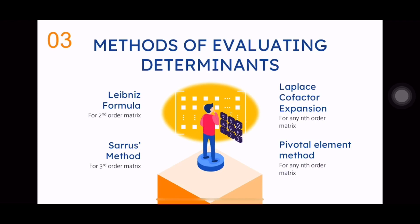We are now on the last section of our discussion on determinants — the different methods we use in evaluating determinants. Because of numerous researches and interests in mathematics, there are many methods for solving determinants. We will focus on four commonly used methods: the Leibniz formula for second-order matrices, the SARS method for third-order matrices, the Laplace factor expansion, and the pivotal element method for any size of matrix.